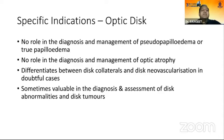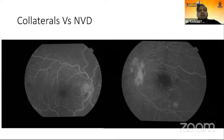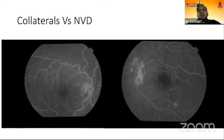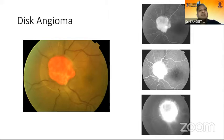Moving to specific indications, starting with the optic disc: FFA has no role in the diagnosis and management of pseudo-papilledema, true papilledema, or optic atrophy. But it may differentiate disc collaterals from disc neovascularization in doubtful cases, and is valuable in assessing disc abnormalities and disc tumors. Disc collaterals won't leak with clear margins, whereas disc neovascularization shows leakage with fuzzy margins increasing over time. A case of disc angioma can also be differentiated by fast dye entry and fast emptying on FFA.